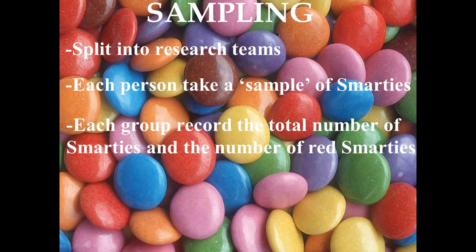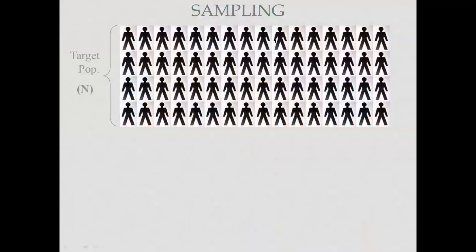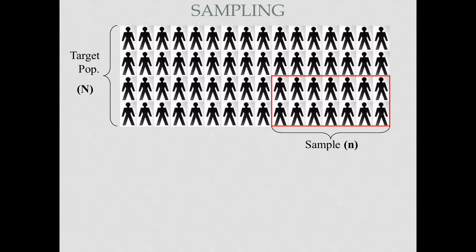Each person takes a sample of smarties; each group records the total number of smarties and the number of red smarties, for example. Let's say we have 50 people — we call this the target population. That means those people who are related to your work. Now, are you going to select all 50 people? The answer is no. Your study is going to tell you whether you need 50 people, 10 people, 5 people, or just one person.